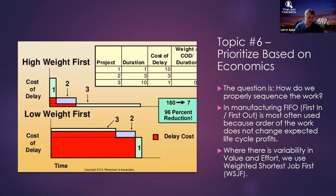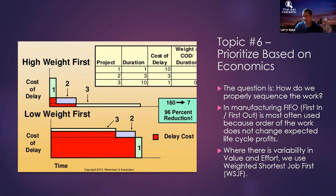Topic number six: everything should be prioritized — I prefer the word sequenced — based on economics. In practice, 'priority' tends to mean what the business wants, which is only the value side of the equation — roughly equivalent to cost of delay. But cost of delay alone isn't enough. I need to sequence, not just prioritize. In manufacturing, first in, first out doesn't matter much. In knowledge work, what we need is weighted shortest job first — the highest value over the least amount of effort.